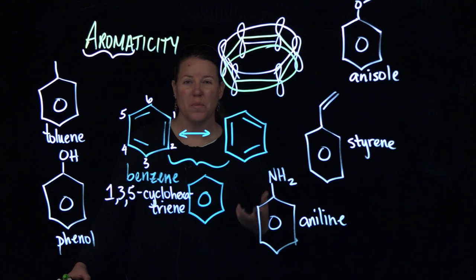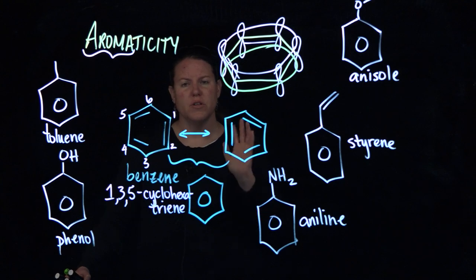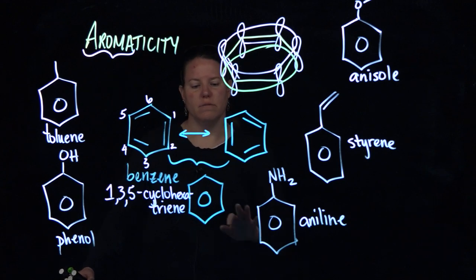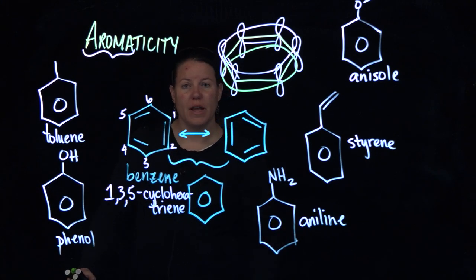So overlapping p orbitals that happen from this conjugated diene, which means alternating single and double bonds. Then we usually draw it like this. And that there are several different molecules that are benzene or benzene derivatives. That's what all of these are. That you have to know something about the common name for in order to understand how they're named.